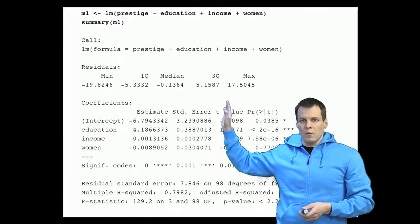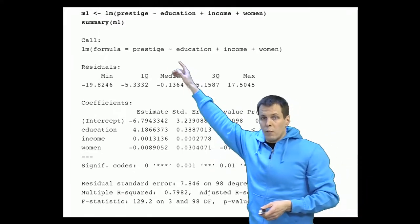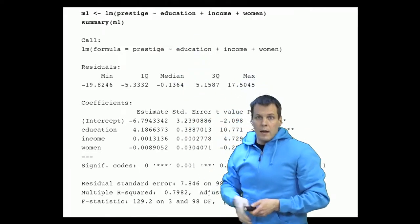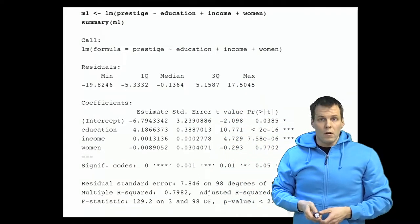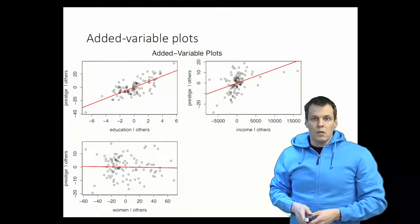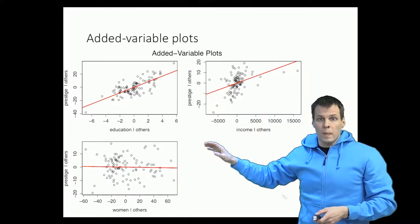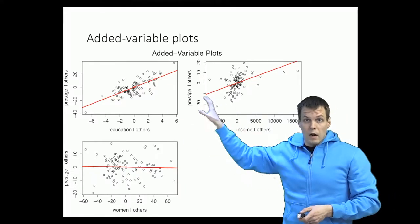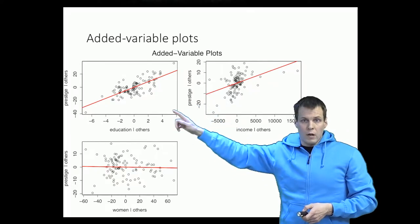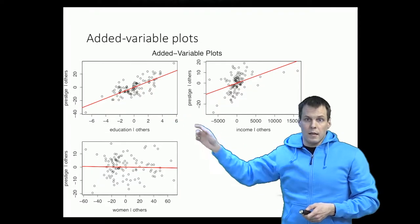We have the prestige data here, and we run a regression on prestige — on income, education, and share of women. Then we do the partial regression plots, or added variable plots, shown here. We usually do them for every independent variable, so these are three plots. We'll be looking at the first one now, since the others are done the exact same way.